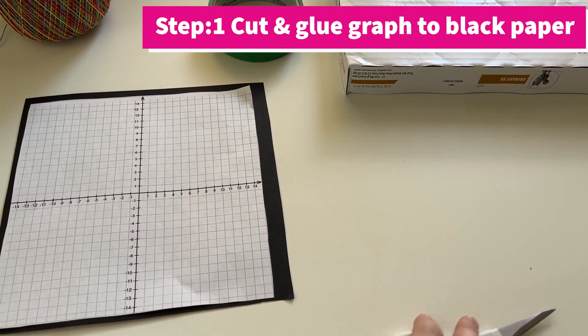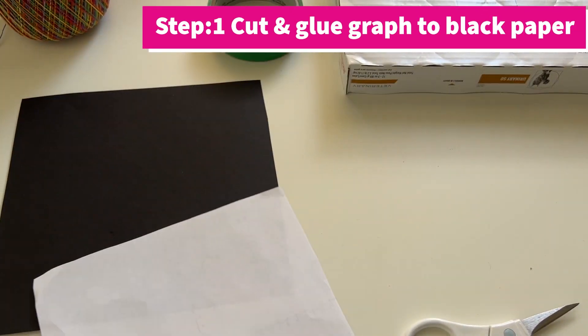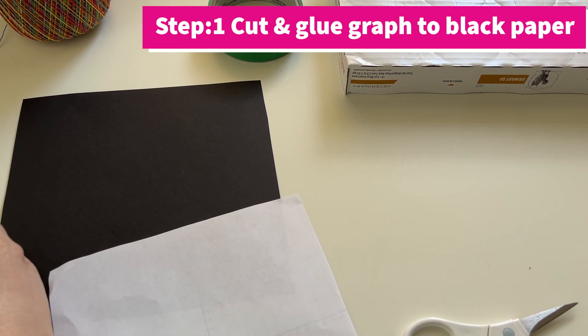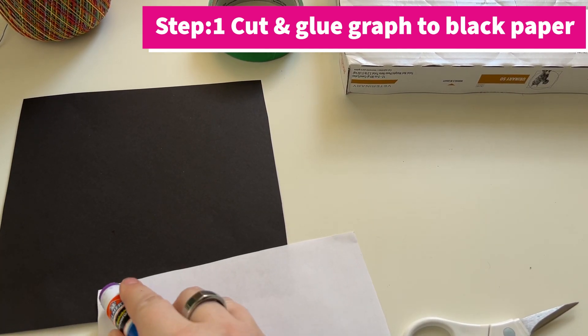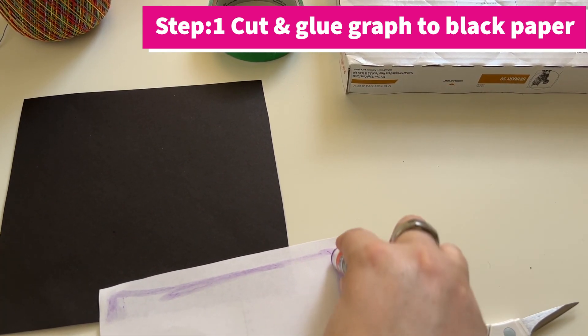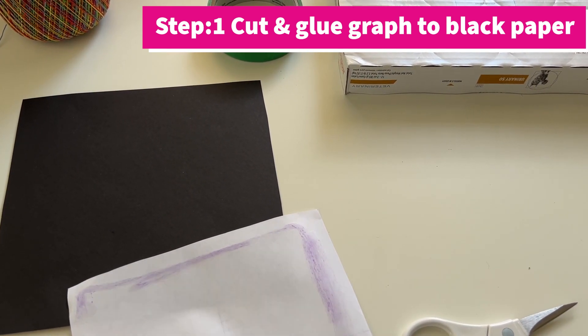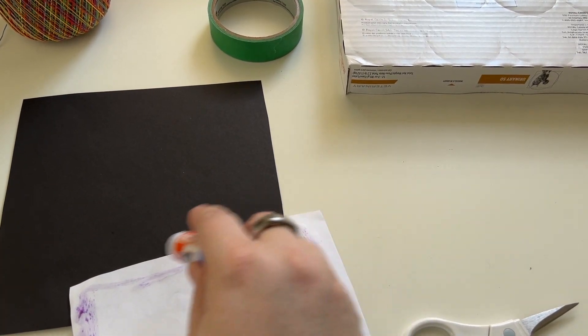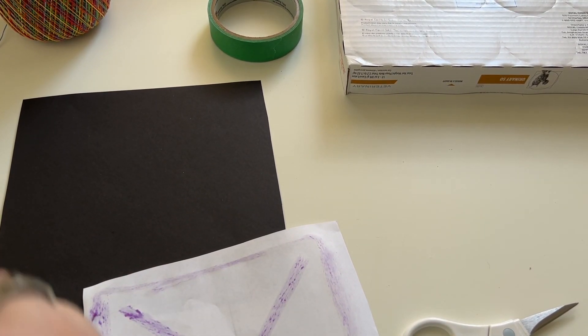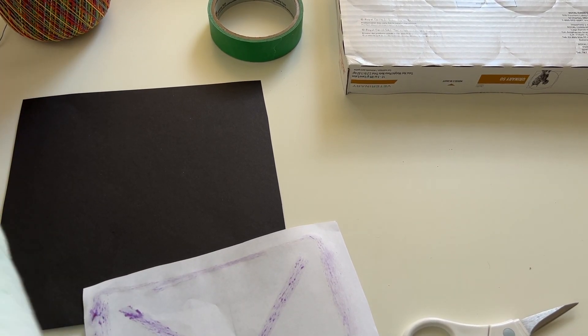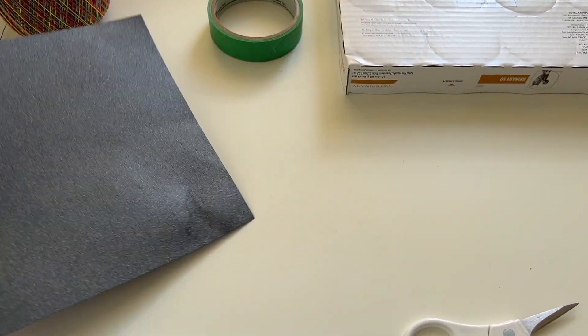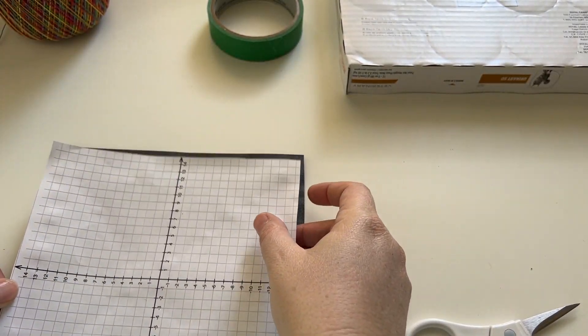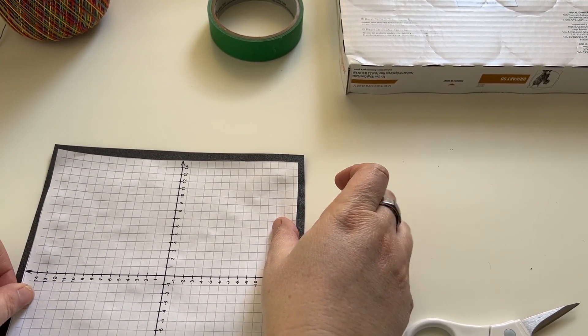The first thing you have to do is glue your graph paper to your black cardstock. Your graph is going to be the back of your artwork and the front will be the black cardstock. The shiny side is going to be my back, so I'm going to glue this into the center.